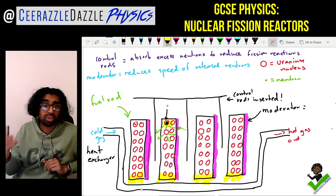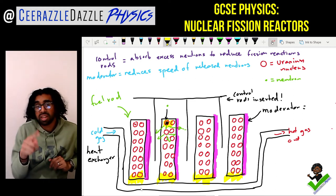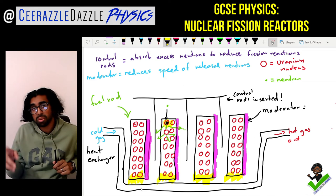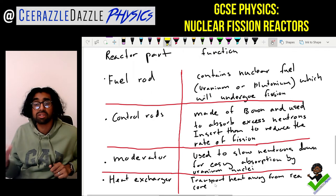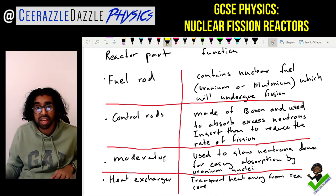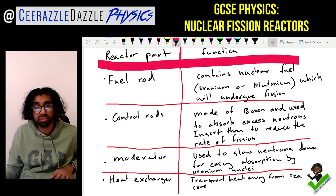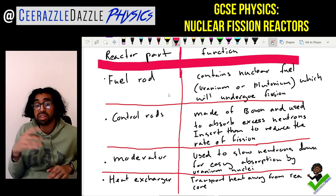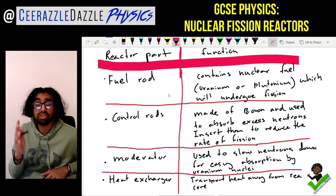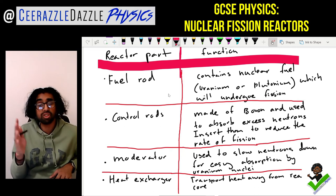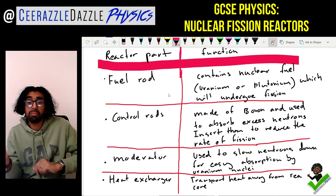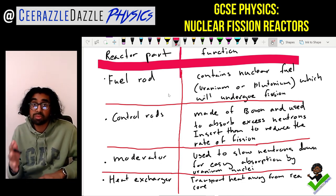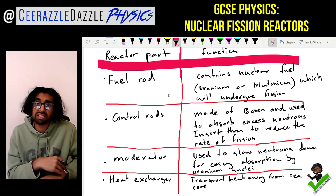So we talked about four different things: the fuel rods, the control rods, the moderator, and the heat exchanger. In summary: the fuel rod contains the nuclear fuel - uranium or plutonium - which undergoes fission. The control rod is made of boron and absorbs excess neutrons; insert them to reduce fission rate, remove them to increase it. The moderator slows down the neutrons so they can be easily absorbed by the uranium nuclei. The heat exchanger transports heat away from the reactor core.